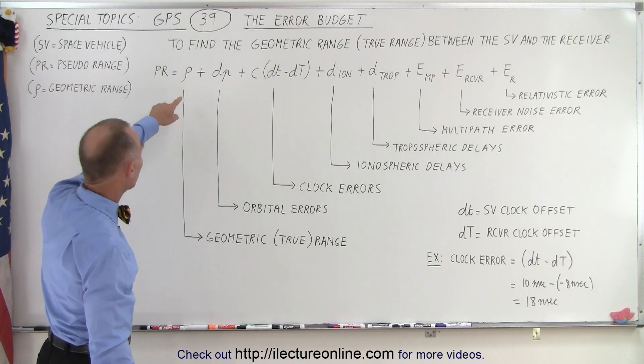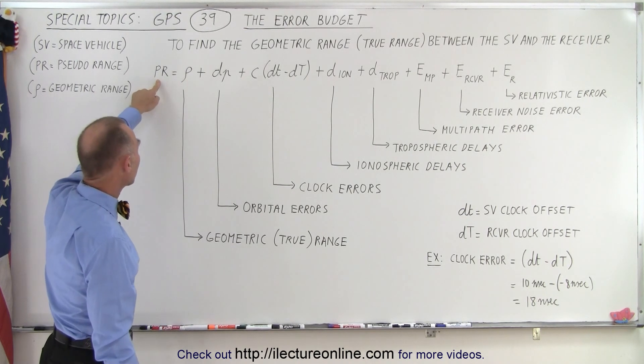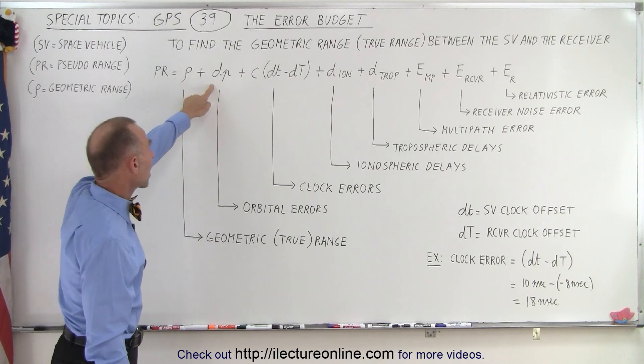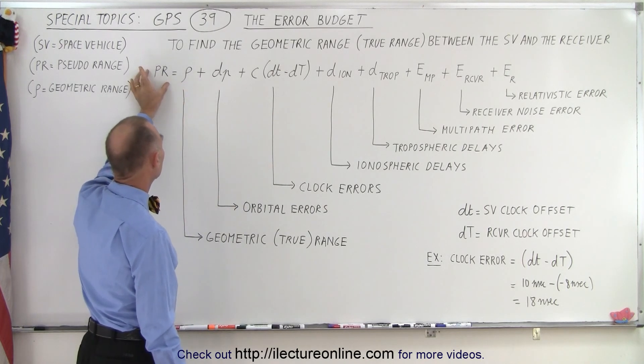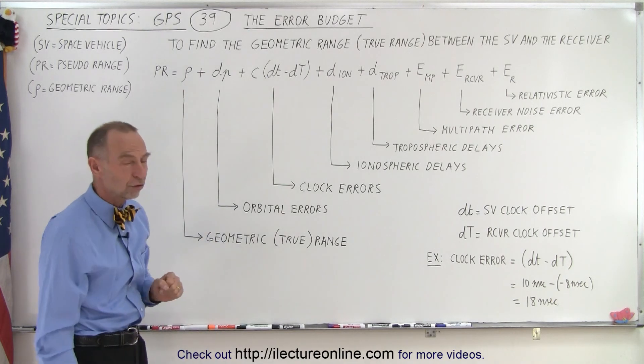To find the geometric range, which is this symbol right here, the symbol rho, we take the pseudo-range and subtract all these other terms. In other words, if we solve for this, we take pseudo-range minus all these correction terms, which gives us the geometric range.